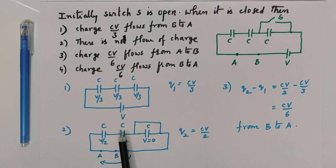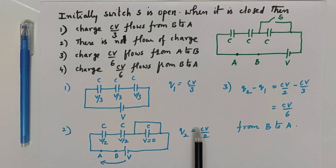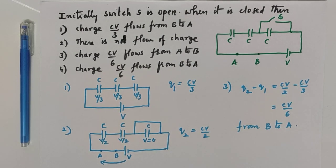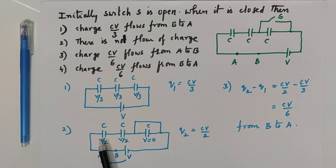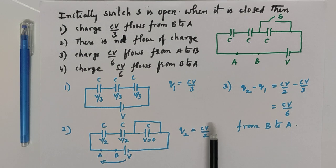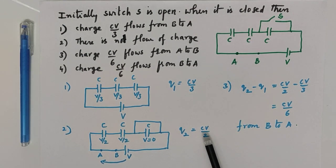The charge on each capacitance Q is equal to CV. Here Q2 is equal to C into potential difference across each capacitance is V by 2. So multiply with V by 2, so CV by 2 is more than CV by 3. That means battery is supplying an extra charge.